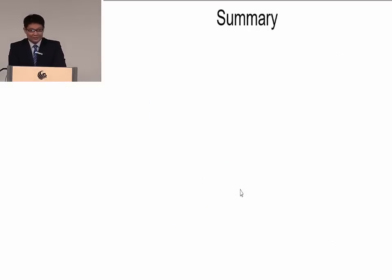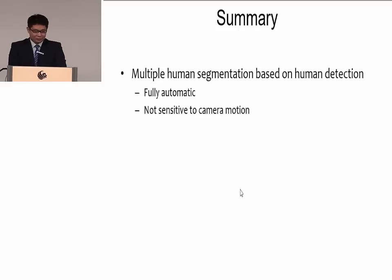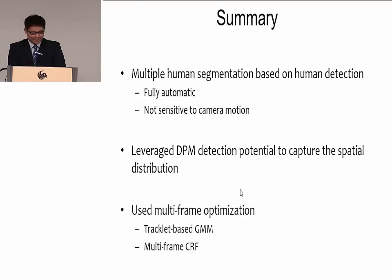To summarize this chapter: we propose a multiple human segmentation method based on human detection, leveraging DPM detection potential to capture the spatial distribution, and using multi-frame optimization to smooth the boundaries.